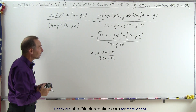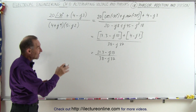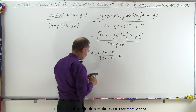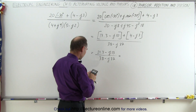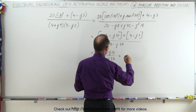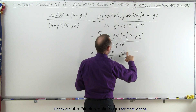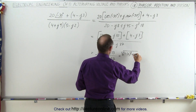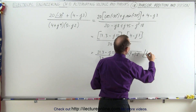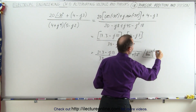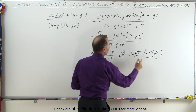Now, how do we divide one complex number by another complex number? The best thing to do is convert this back to the magnitude and the phase angle. So this can now be written as: the magnitude would be the square root of the sum of the squares of the two components. That would be the square root of 21.3 squared plus 13 squared for the magnitude. And for the angle, we take the inverse tangent of the imaginary part, minus 13, divided by the real part, 21.3.